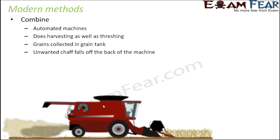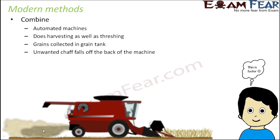The unwanted chaff — the dry casings, coverings of seeds, or stocks — falls off the back of the machine. This process is faster and more efficient. The effort of thousands of people can be replaced by just one machine, which is what makes automated machines so effective.